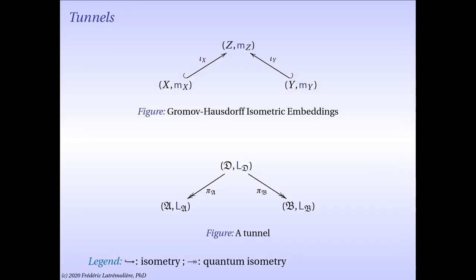We now generalize the construction of Edwards and Gromov to the noncommutative setting. To define the Gromov-Hausdorff distance between two compact metric spaces X and Y, we consider all possible isometric embeddings of X and Y into a third compact metric space Z. We now have the proper notions to make a noncommutative version of such a diagram, which we call a tunnel. Given two compact quantum metric spaces (A, L_A) and (B, L_B), a tunnel is given by a third compact quantum metric space (D, L_D) and two quantum isometries — one from (D, L_D) onto (A, L_A), and one from (D, L_D) onto (B, L_B). It is a typical picture in noncommutative geometry where, by contravariance, the arrows are flipped.